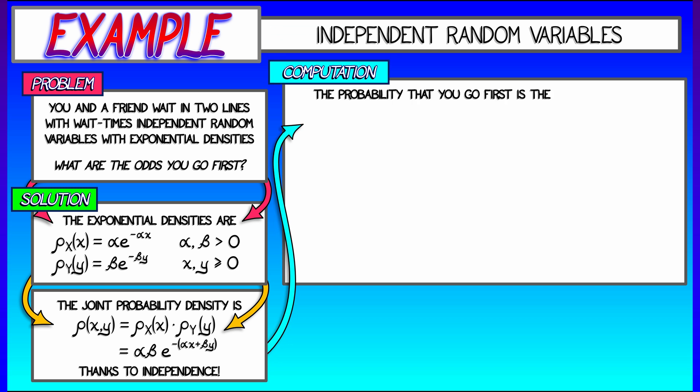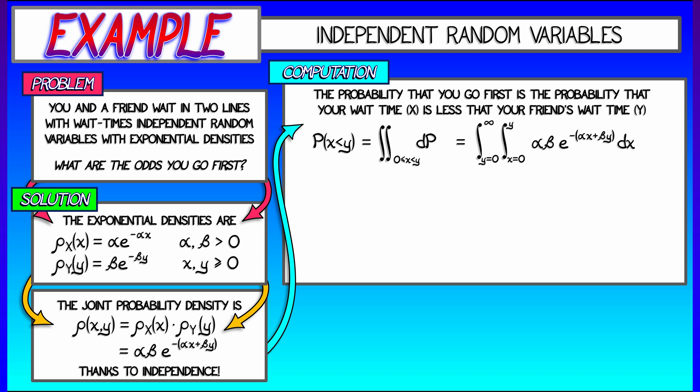Well, the probability that your wait time, x, is less than your friend's wait time, y, is the integral of the probability element, that is, this joint density function, over the subset where x is less than y. The limits of integration on this are going to be x goes from zero to y, and then y goes from zero to infinity. And we're integrating this joint probability density.